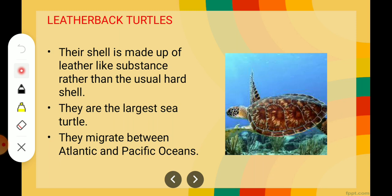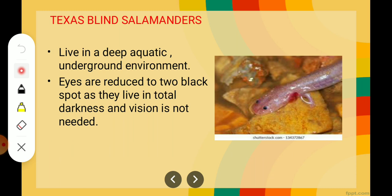Then leatherback turtles. Their shell is made up of a leather-like substance rather than the usual hard shell. In normal turtles the outer shell is made of a very hard material, but in leatherback turtles the peculiar thing is that it is made up of a leather-like structure — not very hard but soft like leather. They are the largest sea turtles, and they migrate between the Atlantic and Pacific Ocean.